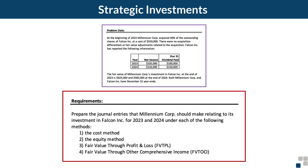Our requirements are to prepare the journal entries that Millennium Corp. should make relating to its investment in Falcon for both 2023 and 2024 under each of the following methods: 1. The cost method. 2. The equity method. 3. Fair value through profit and loss, or FVTPL. 4. And fair value through other comprehensive income, or FVTOCI.